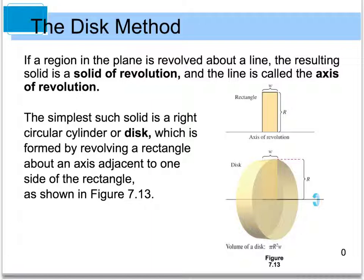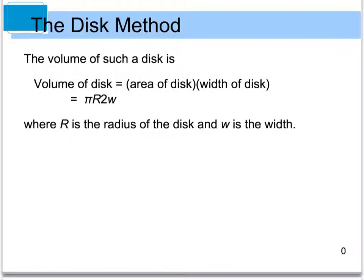A disk is formed when we revolve this rectangle about the axis in a circular motion. You can see what that 3D solid looks like — it has a width and a circular surface we can find the area of. The volume of a disk is the area of the circle times the width. So the area of the disk, since it is a circular shape, is equal to π r², and the width is w.